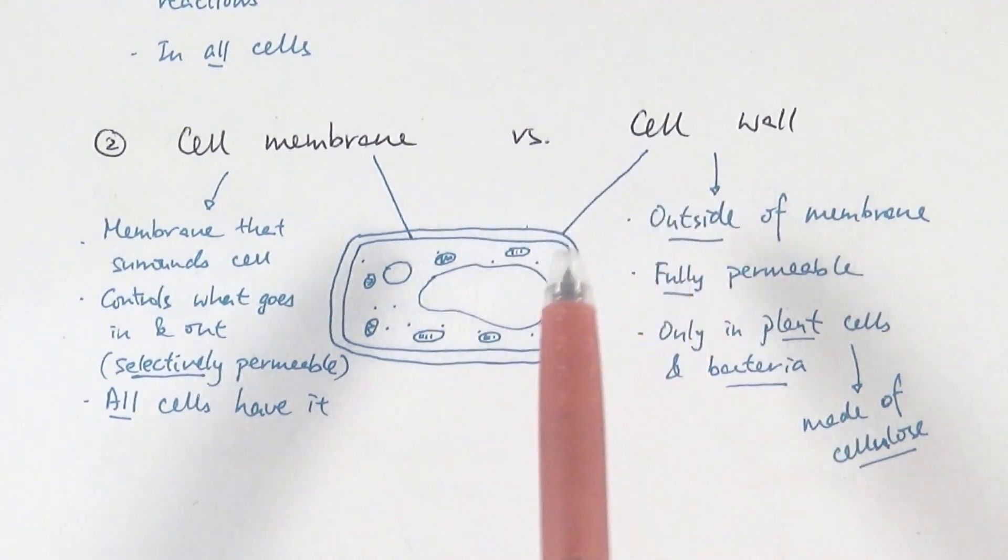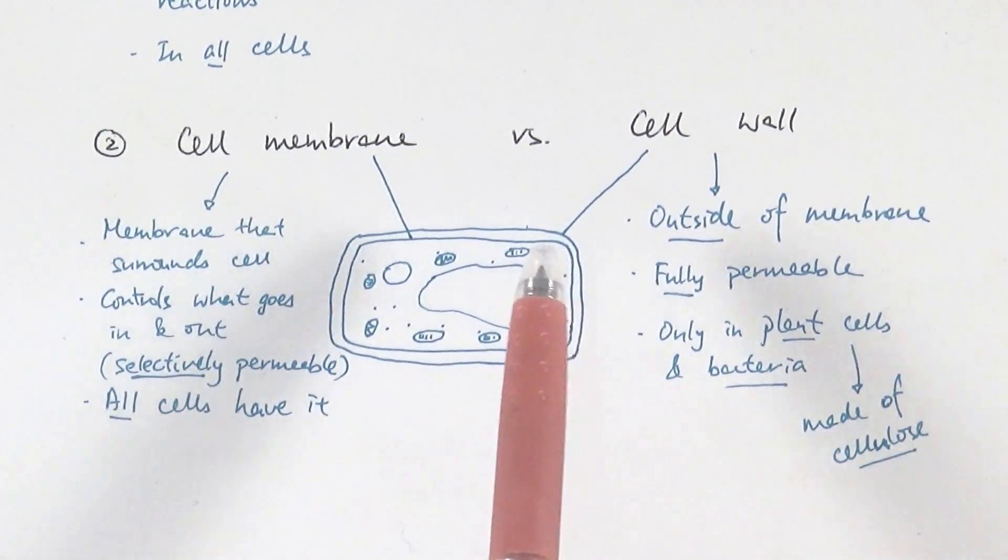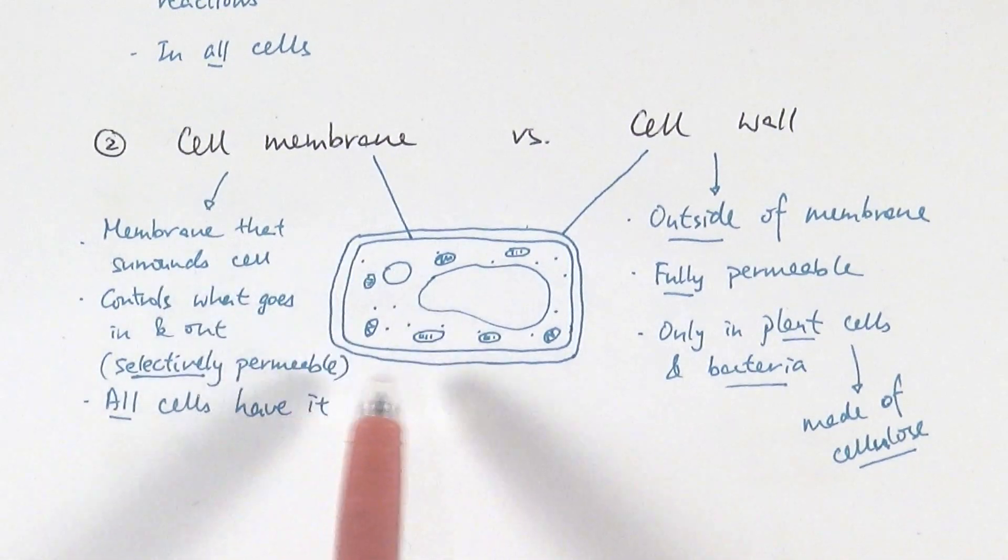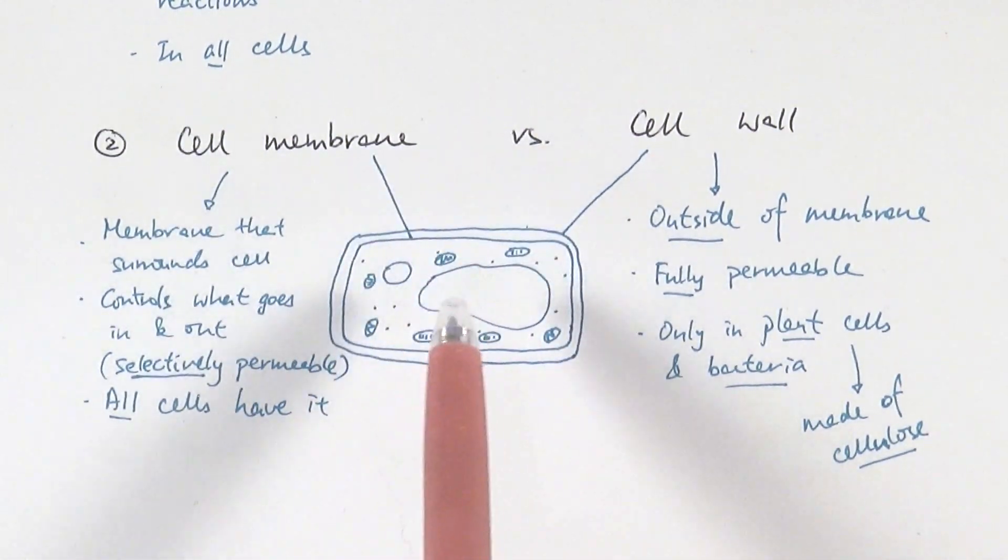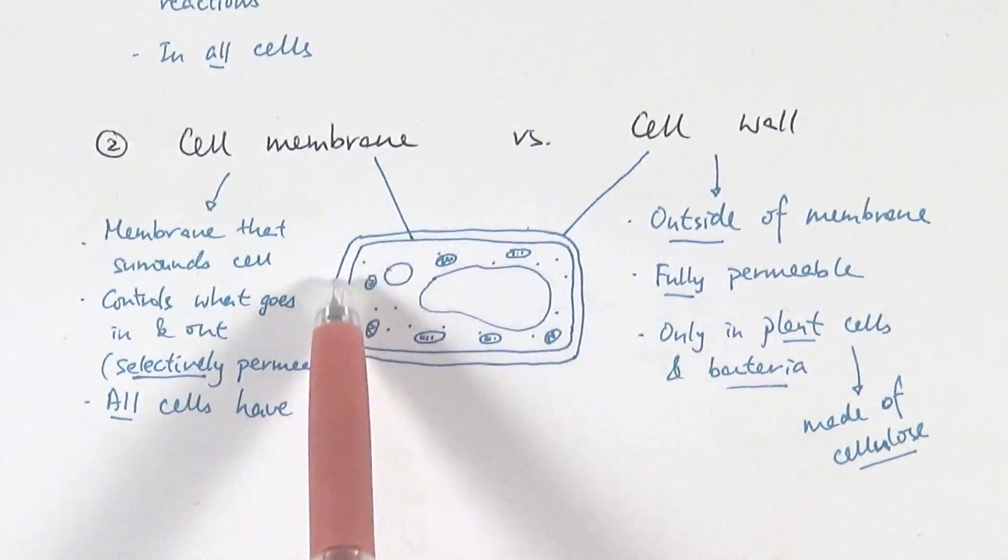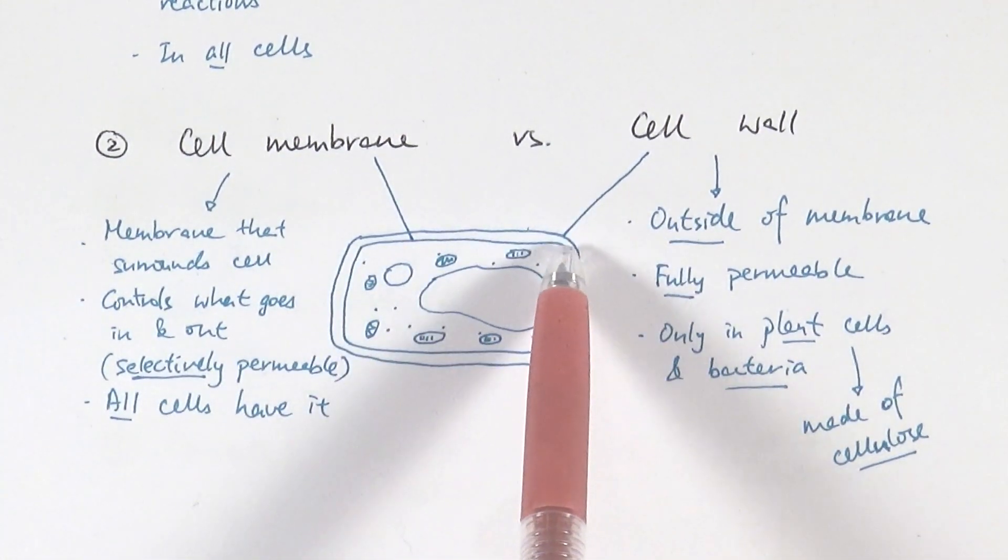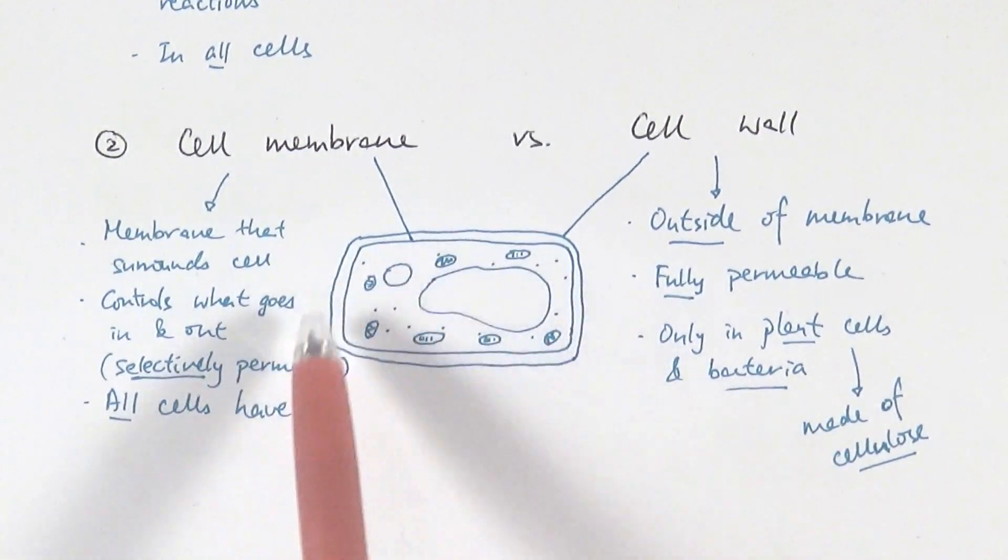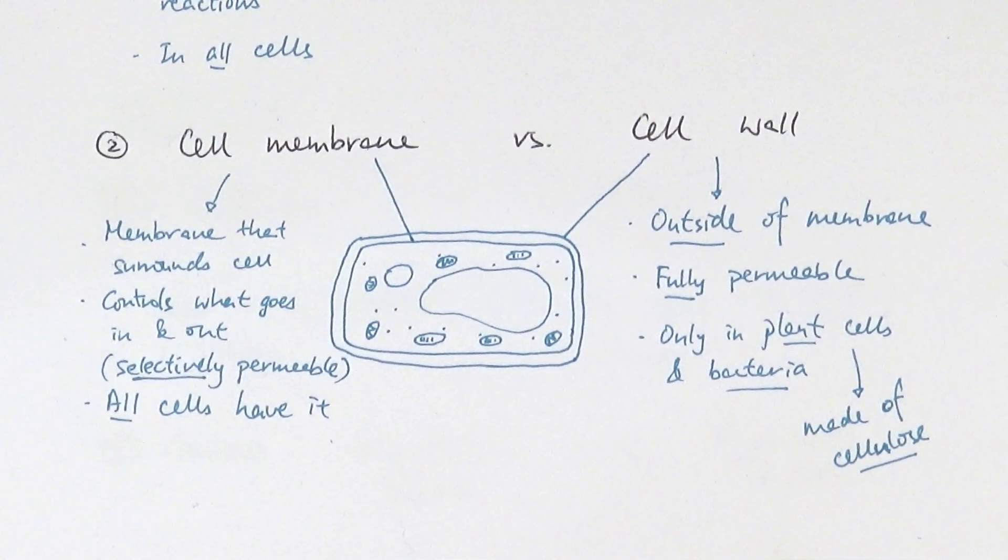The cell wall on the other hand is only found in plant cells and bacterial cells, so not in animal cells. Another key thing is people often mix up is thinking which one's on top. The cell membrane is the thin membrane, the thin layer inside, and the cell wall is outside of the membrane. It surrounds the membrane, sometimes acting as a protective mechanism or protective layer to keep the shape of the cell.